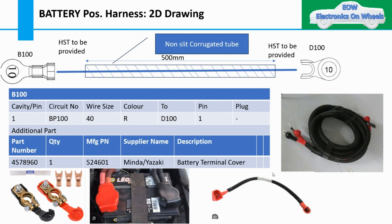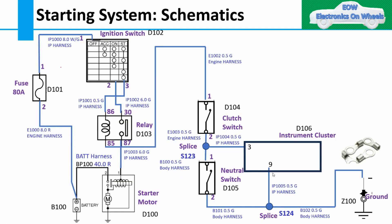Before moving forward, I am not taking the big harness - I am just taking two terminals and one wire. This is the battery positive harness. If you see here, this is my circuit and I have to make the battery positive harness. This connection is from B100 to D100, and this is the one wire going from this terminal to this one.